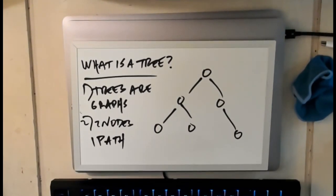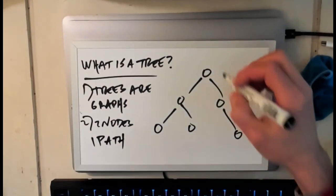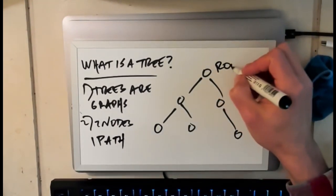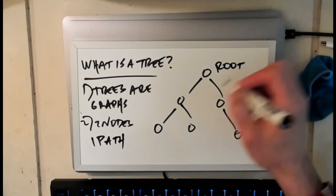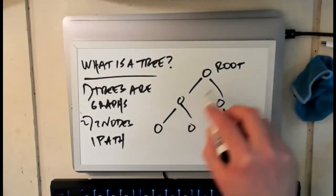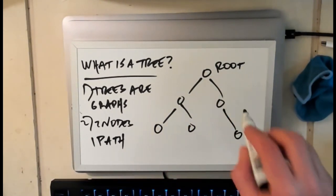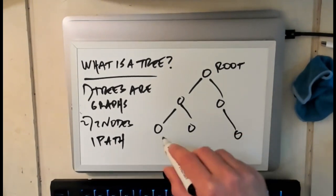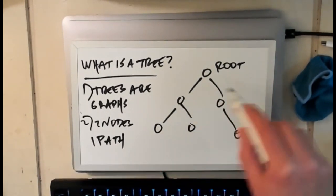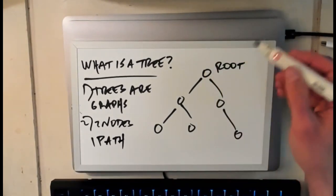One interesting way to think about this is to think about the node that we have been referring to as the root. The root is the node that has no parent. I should be able to find a path, there should be a single path back to the root from any node in the tree. Any node in the tree, if I just follow its parent nodes, I'm supposed to arrive at the root. And then when I get to the root, there's no parent, and so I'm done.